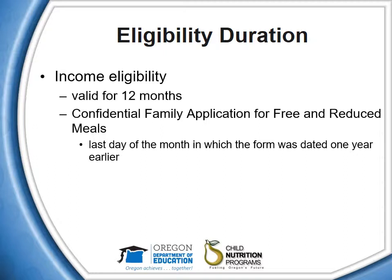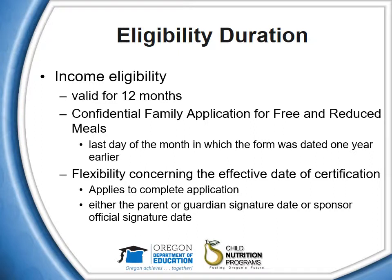A form signed and dated by a sponsor on June 1st, 2015 is considered valid until June 30th, 2016. Sponsors have flexibility concerning the effective date of certification for program benefits. This flexibility applies only to eligibility determinations made through the application process of complete applications containing all required information at the time of submission. The date used to make this determination is the date on which either the parent or guardian signs the form, or the sponsor official signs the application to certify eligibility. Sponsors must decide which date they will rely on as the effective date and apply this date to all applications. If the date of a parent or guardian signature is not within the month of certification or the immediately preceding month, the effective date must be the date of the certification.